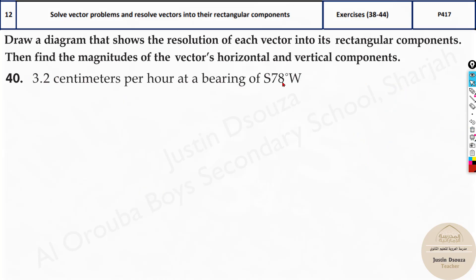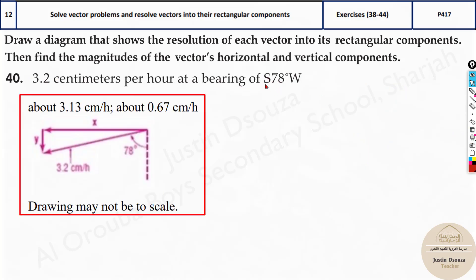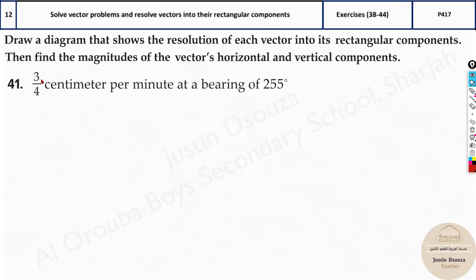Please try the other problems by yourselves. Here it is from south west. So we know from south to the left side, that will be the west. You can see here, from the south to the west, 78 degrees. All you need to do is put 3.2 cosine 78, you will get the x, and 3.2 sine 78 will give you this answer. They have also mentioned the units because it is given in the question. It is 3.2 centimeters per hour, so it is centimeters per hour.